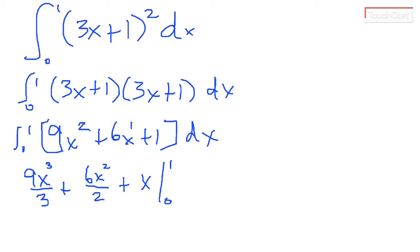I want to evaluate that from 0 to 1. Your choice, if you want to simplify this, you might prefer to write that this is 3x cubed plus 3x squared plus x from 0 to 1. Did I get that right?